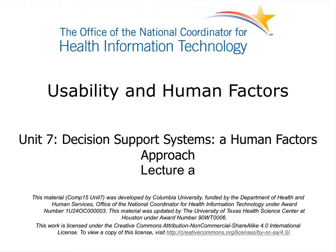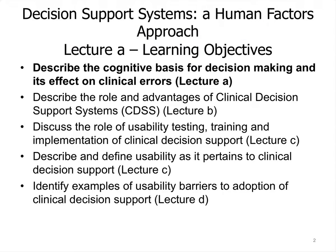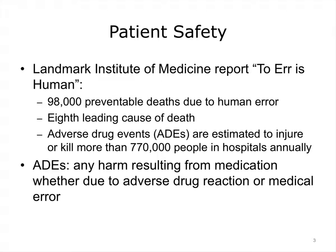DSS includes lower-technology solutions such as paper-based guidelines; however, we will focus on computer-based clinical decision support systems (CDSS) and computerized provider order entry systems. In this lecture, we will focus on the basics of human decision making. The objective for this unit is to describe the cognitive basis for decision making and its effect on clinical errors.